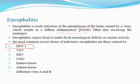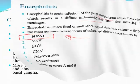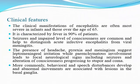Although varicella, Epstein-Barr, cytomegalovirus, enteroviruses, and adenoviruses may also cause encephalitis, herpes simplex type 1 is the most common. It usually affects infants and patients above 65. Those who are immunocompromised are more prone to develop encephalitis.